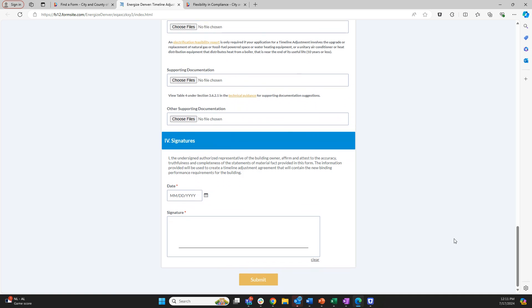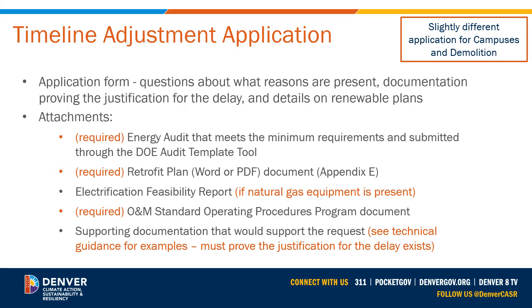Once you've completed the form and attached all the necessary documentation, click Submit to send your form to the city. You'll receive an email confirmation that the form was successfully submitted. The city will review the information in your timeline adjustment application and, if needed, have a conversation with building representatives to refine the plan. The city will then create a timeline adjustment notice containing the agreed-upon timeline, due dates, interim and final targets, reporting requirements, and penalties that would be assessed if the plan is not completed as agreed.